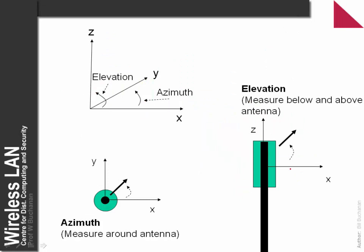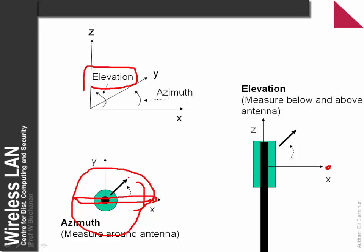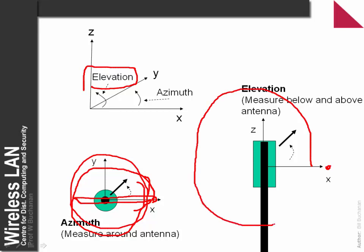When measuring an antenna, we set up a measurement and move around it. We measure the electrical power as we go around — this is the azimuth measurement. We also start at one point and go up over the antenna and come back around the other side through a full 360 degrees — this is the elevation measurement. So we can do two measurements: one around the azimuth and the other around the elevation.